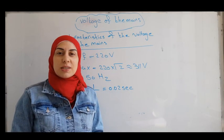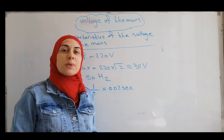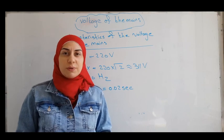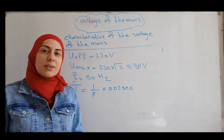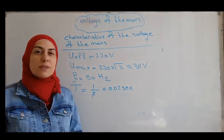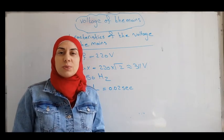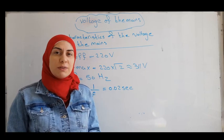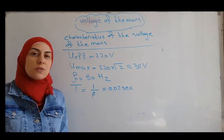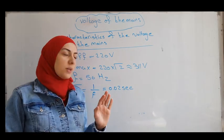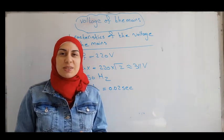You must study the characteristics of the voltage of the mains, although sometimes they are given for you. The voltage of the mains are characterized by U effective is about 220 volts, so U maximum is 220 times radical 2, it's about 311 volts. The frequency of the voltage of the mains is 50 hertz, so the period is 1 over F, 0.02 seconds.